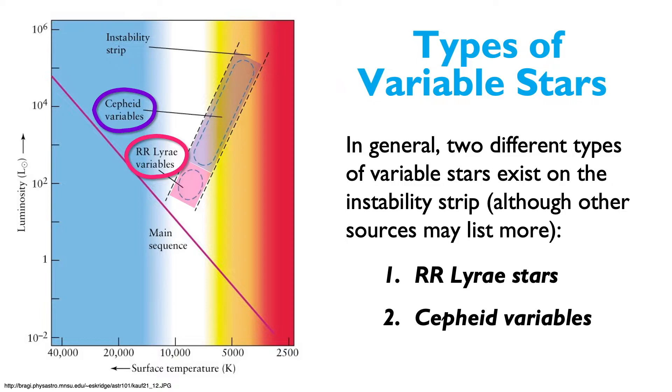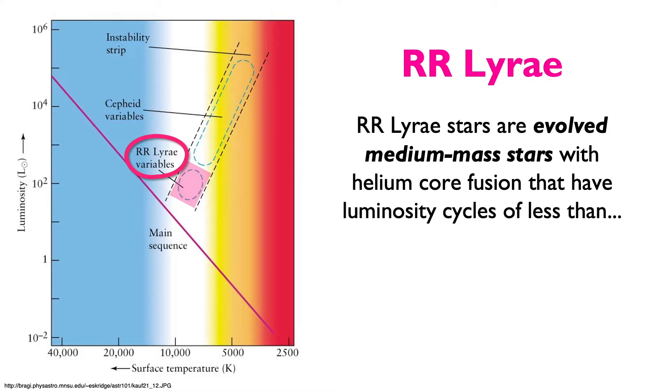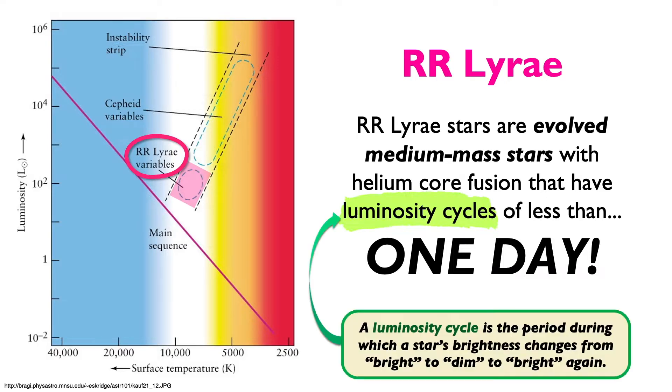But first, we'll talk about RR Lyrae stars because RR Lyrae stars are evolved medium mass stars with helium core fusion that have luminosity cycles of less than one day. Now, why is this so special? And what's a luminosity cycle in the first place? A luminosity cycle is the period of time during which a star's brightness changes from bright to dim to bright again.